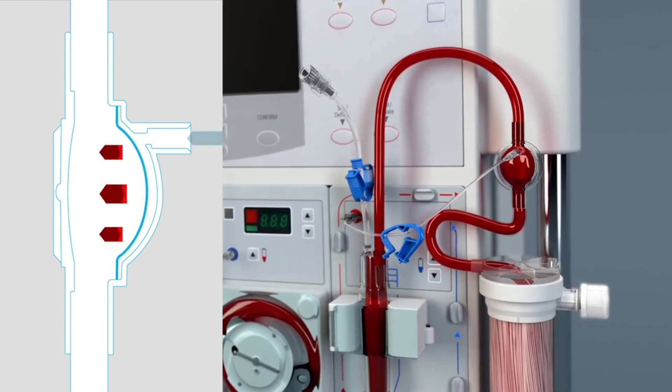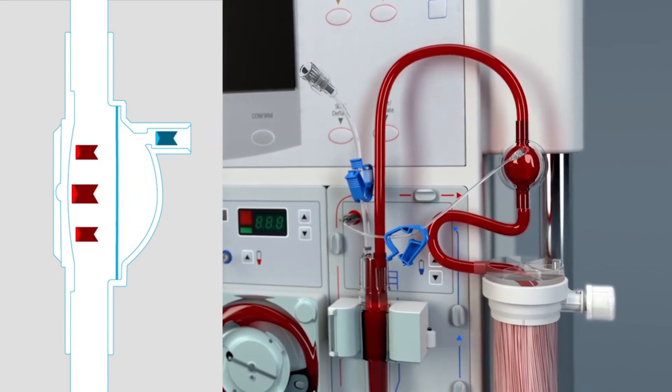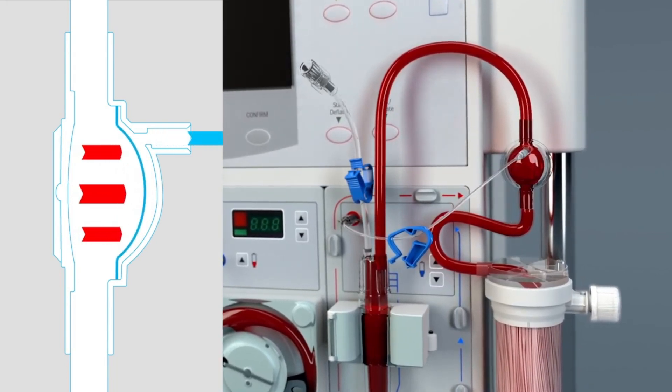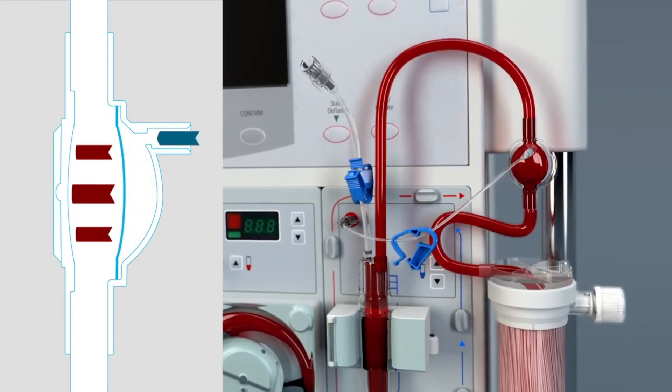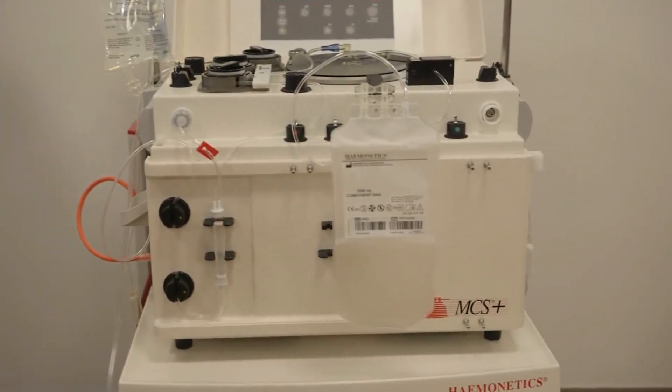To stop the blood from coagulating, anticoagulant is automatically mixed with the blood as it is pumped from the body into the apheresis machine. And the third method is centrifugation variables.